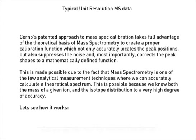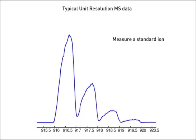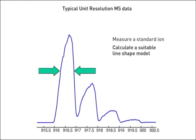Let's see how it works. First, the calibration standard ion is measured with the data acquired in profile mode. CERNO's calibration can only function with the profile mode data. Once the data is centroided, all the necessary information to do a proper calibration or recalibration is lost. This profile spectrum is the standard from which we will derive our calibration. MassWorks first examines the standard ion and calculates a mathematically defined line shape that closely approximates the measured line shape. For example, it may be determined that the measured line shape is closely approximated by a Gaussian line shape whose half-width is 0.32 Daltons.